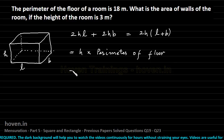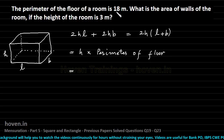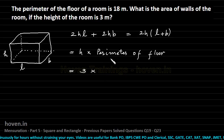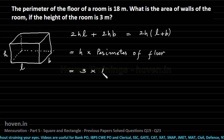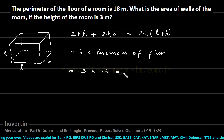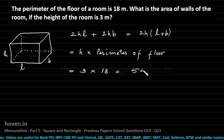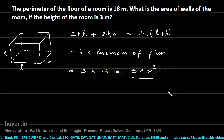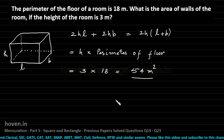Now let us put in the values. The perimeter of the floor is 18 meters and the height of the room is 3 meters. So height is 3, multiplied by the perimeter of the floor which is 18. What we get is 54 square meters, which is the required answer. Let us move to our next question now.